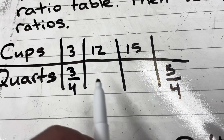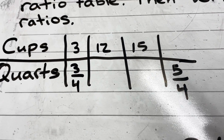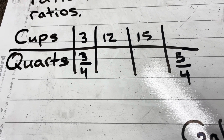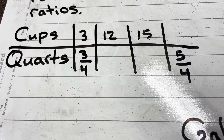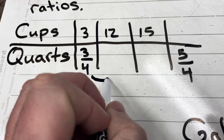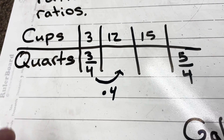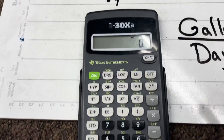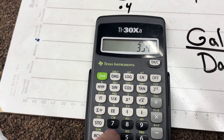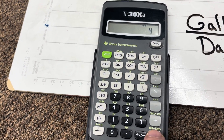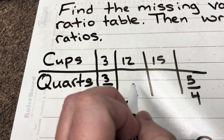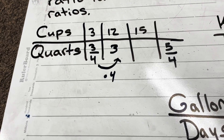For this first missing value, I ask: what did I do to 3 to get 12? I multiplied by 4. So I need to do 3/4 times 4. I come over to my calculator, take 3 over 4, multiply by 4, and that equals 3. So for 12 cups I need 3 quarts.